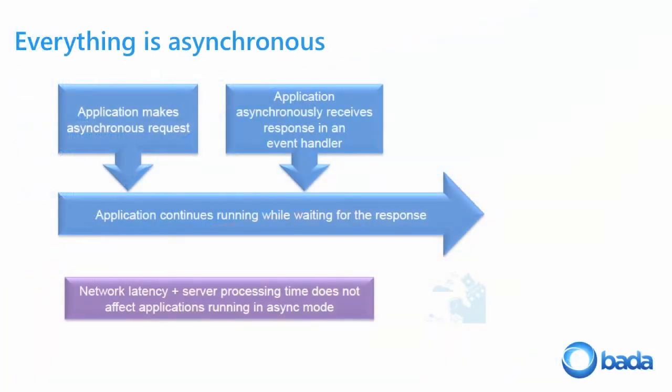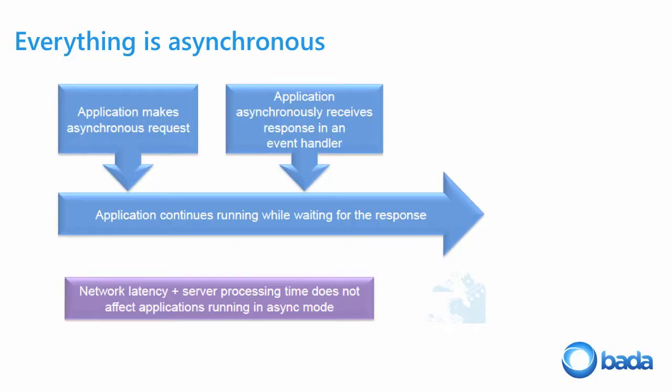Everything's asynchronous on a mobile phone. You don't want your movie interrupted while you're waiting for the result of a sensor or something else to happen. There's so many things going on, so many technologies on the mobile phone, you don't want to make the user wait for something to return a result. So we send off an asynchronous request and we wait in our event handler to get the response back.